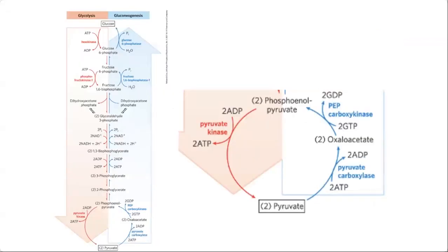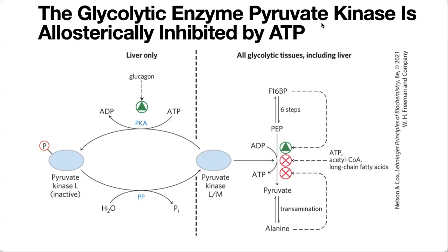Finally, let's talk about the last step. In glycolysis, phosphoenolpyruvate (PEP) has its phosphate group transferred onto ADP to give ATP — carried out by pyruvate kinase. In gluconeogenesis, the reverse happens in two steps: pyruvate carboxylase takes us from pyruvate to oxaloacetate, and PEP carboxykinase takes us from oxaloacetate to phosphoenolpyruvate. That glycolytic enzyme, pyruvate kinase, is going to be allosterically inhibited by ATP, and in our liver it's also regulated by phosphorylation.